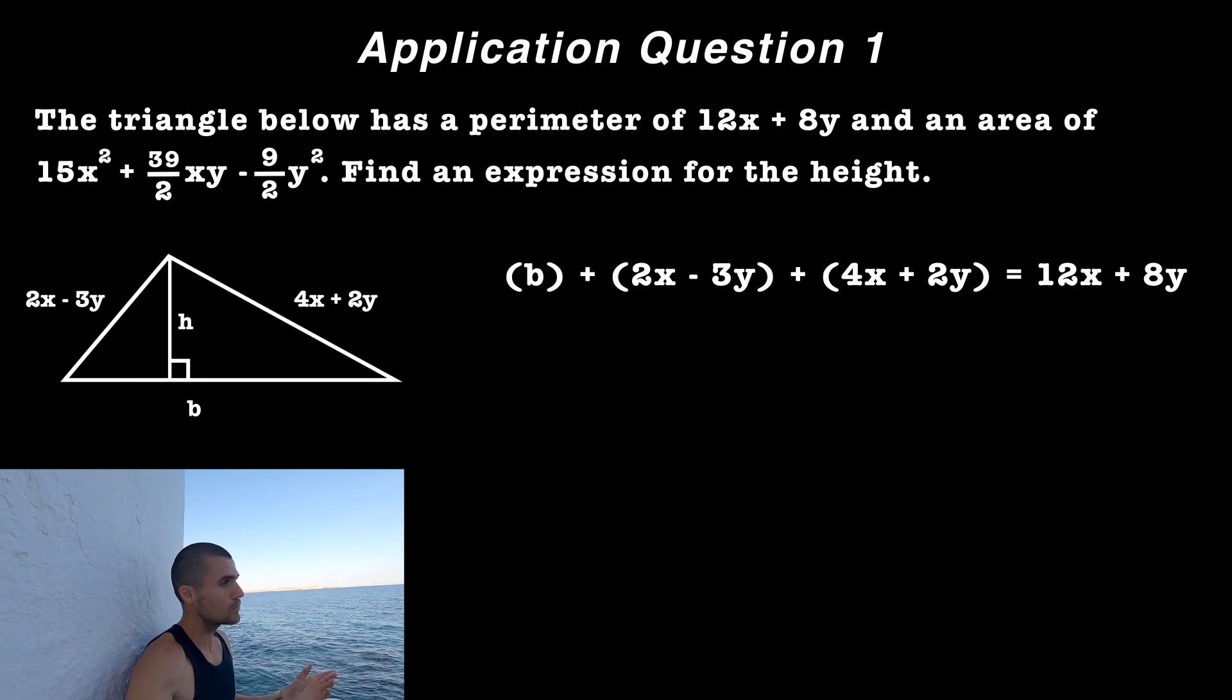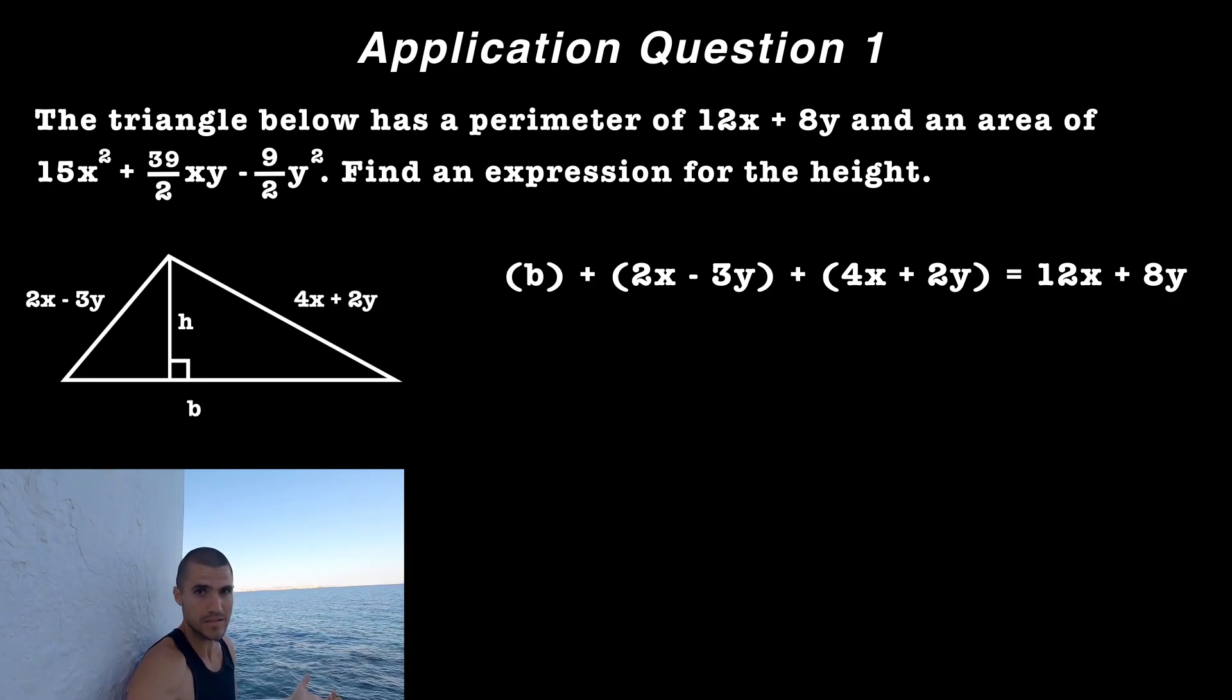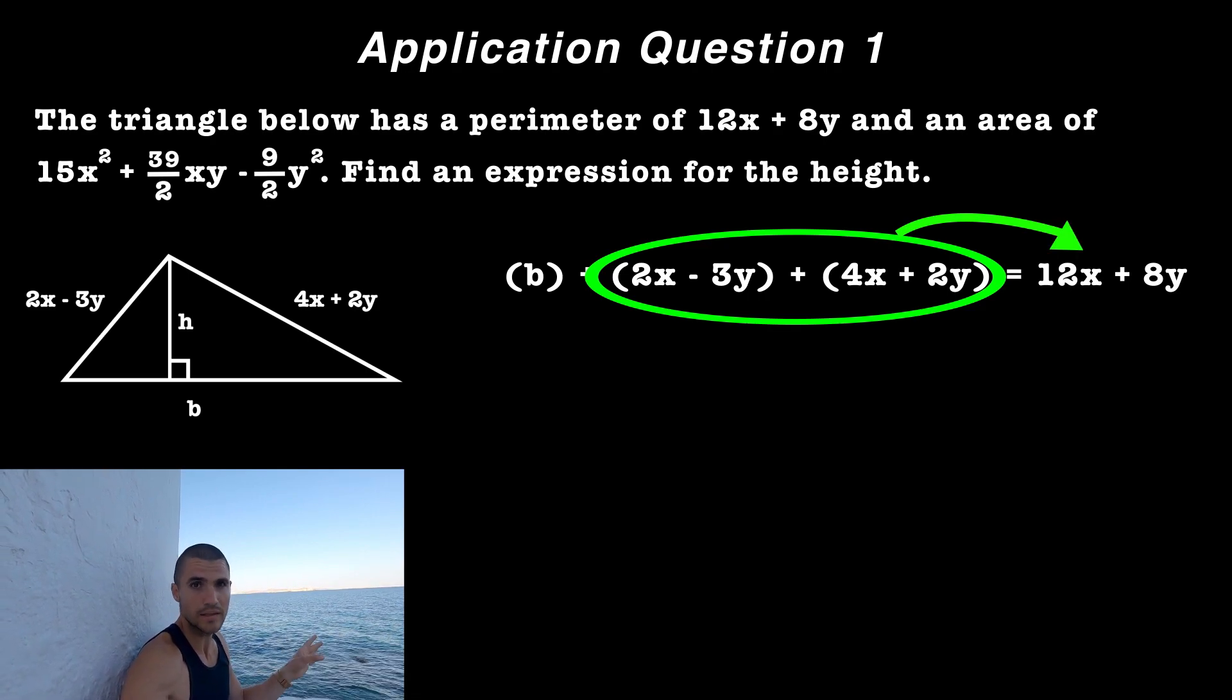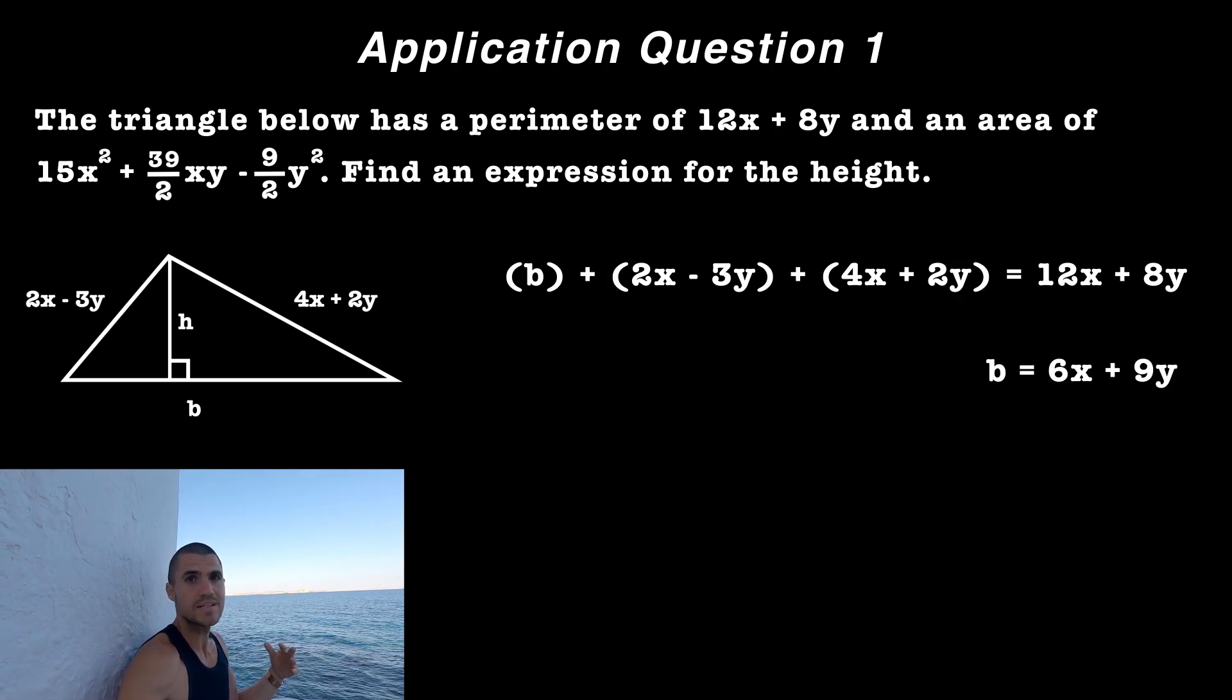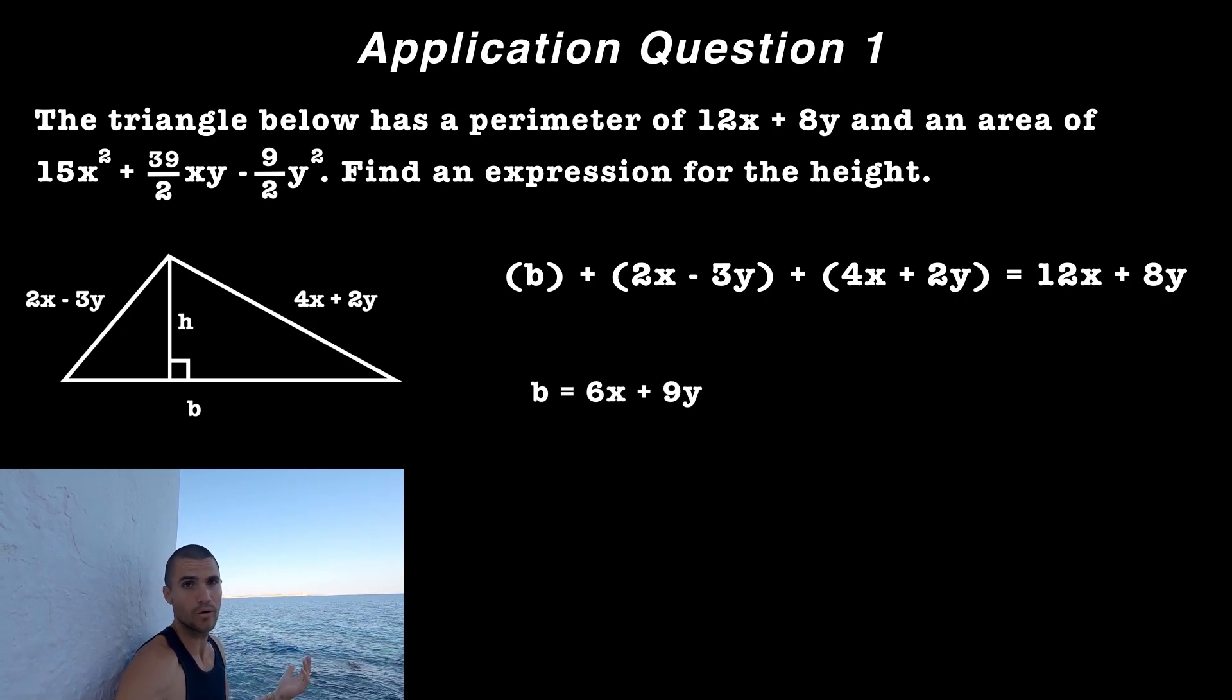And so now we can isolate for that letter B, that variable B, which represents the third side, the base. And when we do that, when we bring everything over, keep the base on the left side, we'd end up with 6X plus 9Y as an expression for the base.